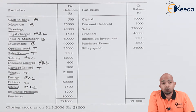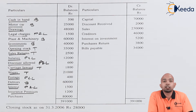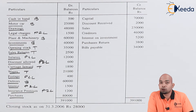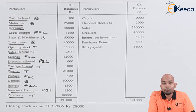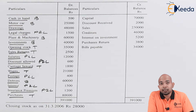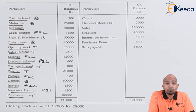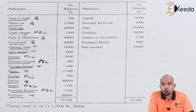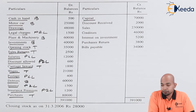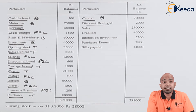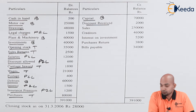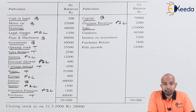Interest is an expense, hence a part of the profit and loss account. Insurance premium again is a part of the profit and loss account as it is an expense you have paid out. Purchases is a part of the trading account. We've completed all the debit side items. On the credit side: capital is a part of the balance sheet liability side, and discount received is a profit and loss account credit side item. Sales is a part of the trading account credit side.